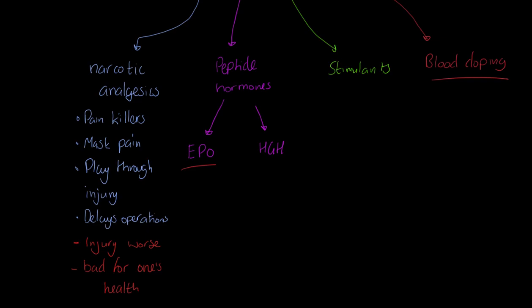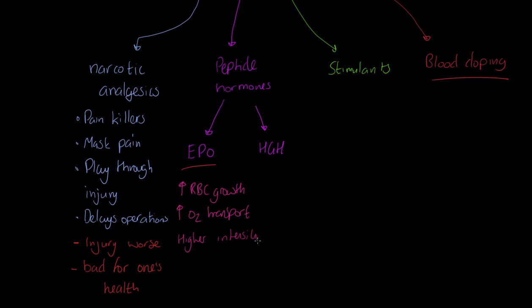EPO — erythropoietin — is a peptide hormone typically taken through injections. Erythropoiesis is the production of blood cells in the bone marrow, and erythropoietin effectively stimulates that process, increasing red blood cell growth. Why would that help? We get increased oxygen transport. Think about your aerobic performers — endurance cyclists, endurance runners — they're going to get better oxygen transport.